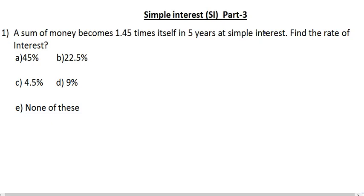The next question is: a sum of money becomes 1.45 times itself in 5 years at simple interest, find the rate of interest. This is the equation. The time is 5 years. This is the rate of interest.